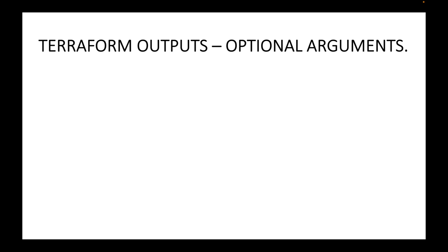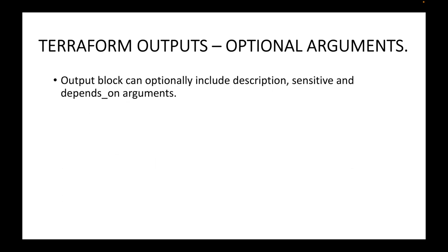In this session we will look at the optional arguments that you can pass with your Terraform outputs block. The output block accepts some optional arguments: description, sensitive, and depends_on. We will look at each of these one after the other.